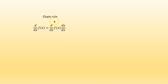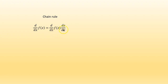We explain the chain rule: d/dx of f(z) = d/dz of f(z) · dz/dx. That is, when you take the derivative with respect to x of a function in terms of z, you first take the derivative with respect to z of the function, and then take the derivative with respect to x of z.